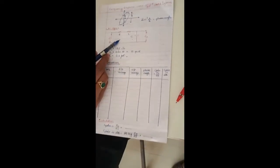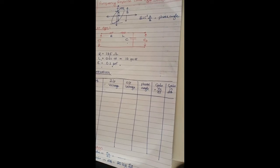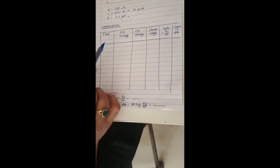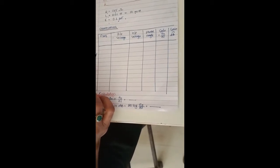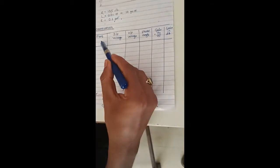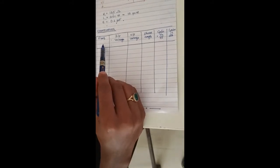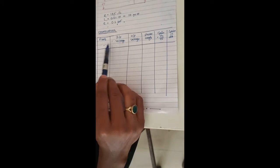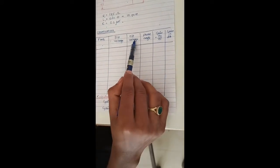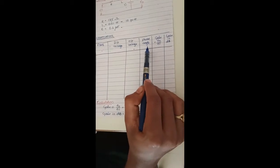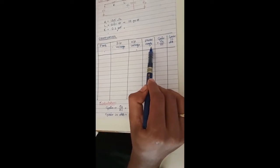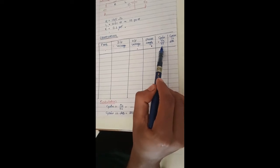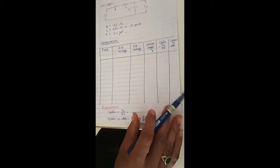This is the basic RLC circuit for which we are obtaining the frequency response of a second order system. For various values of frequency, we will initially set the input voltage, and for every input voltage and every frequency we will note down the output voltage. We will also calculate the phase angle by measuring it through the waveforms on the CRO, and we will calculate the gain and the gain in decibels.